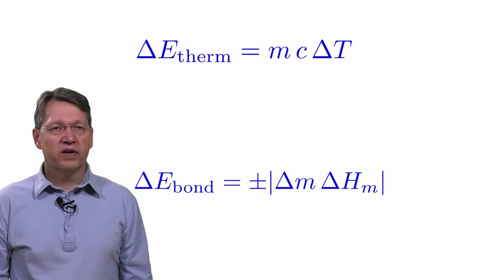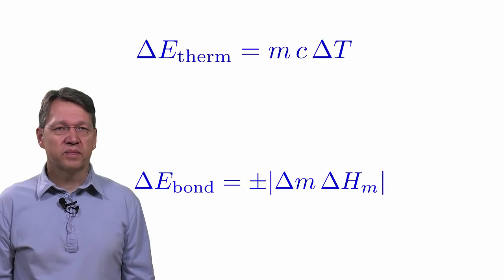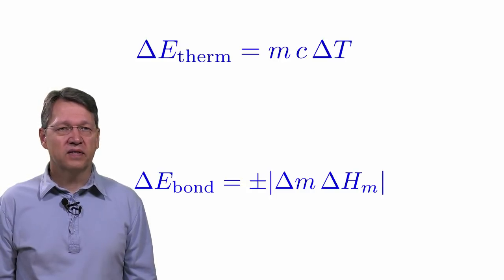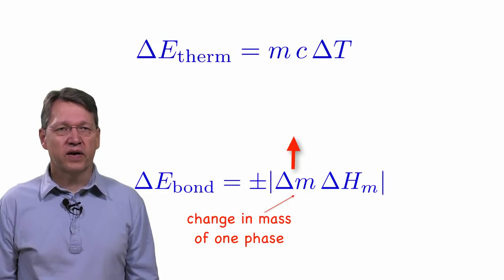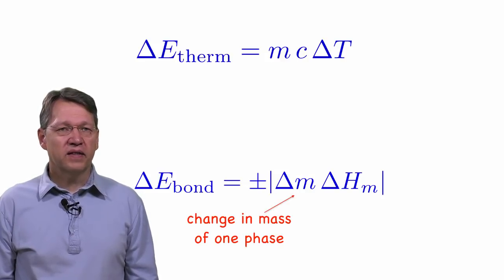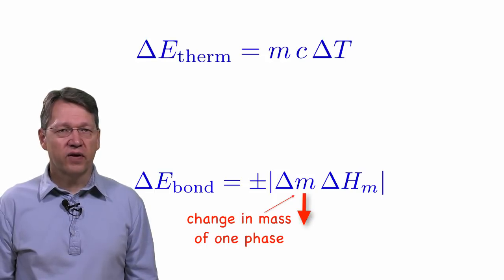The sign convention for the change in bond energy is a little more confusing. For example, when we melt ice, some people might take the amount of liquid water as the indicator. That's what I do. But other people might take the amount of solid ice as the indicator and their delta M would be the negative of my delta M.